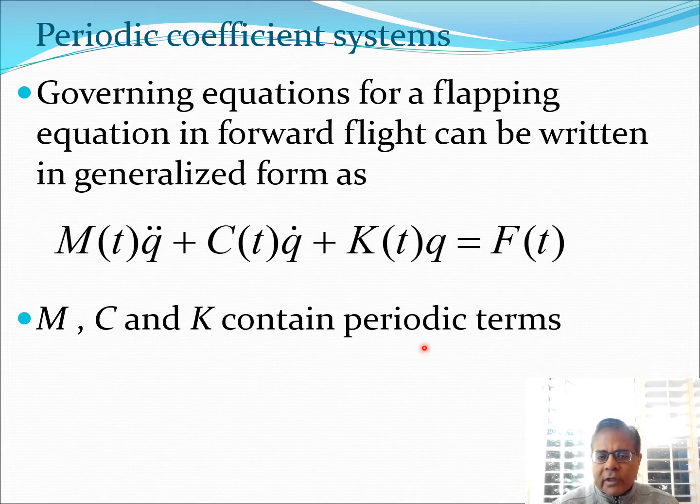Now we know that the governing differential equations for a rotor in forward flight can be expressed as M q double dot plus C q dot plus K q equals F. Typically in a general sense M, C, K, F are all periodic functions of time. The time period is typically expressed as 2π, but the way we are developing the formulation the time period could be anything else, so this formulation is valid for any periodic system.